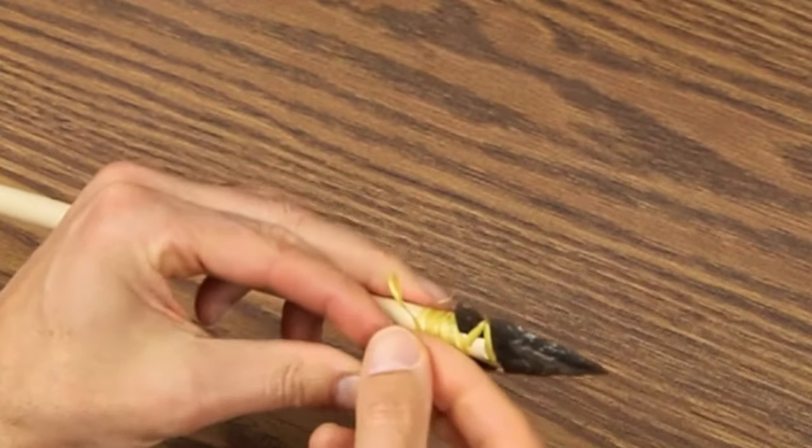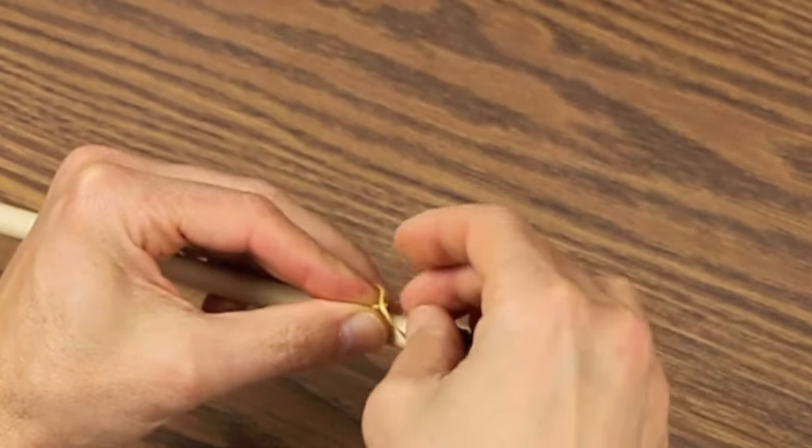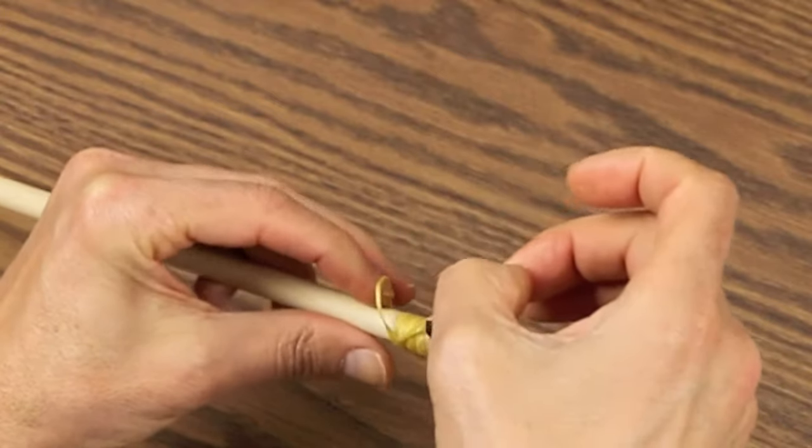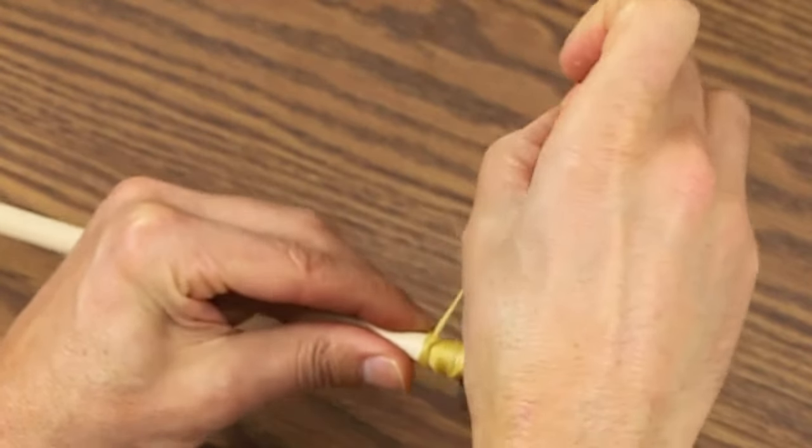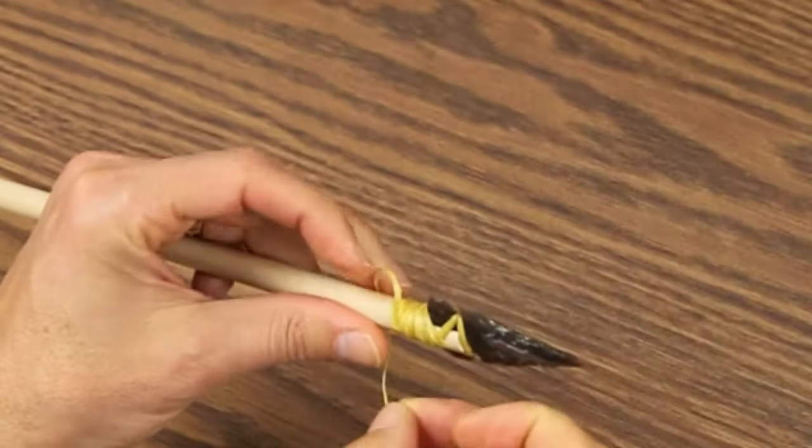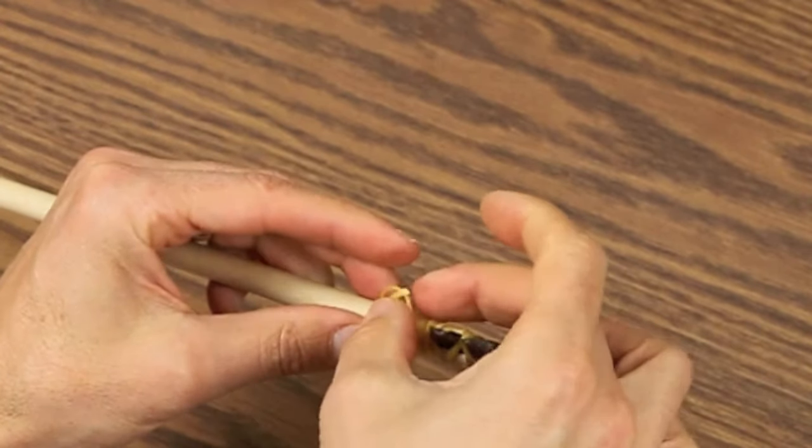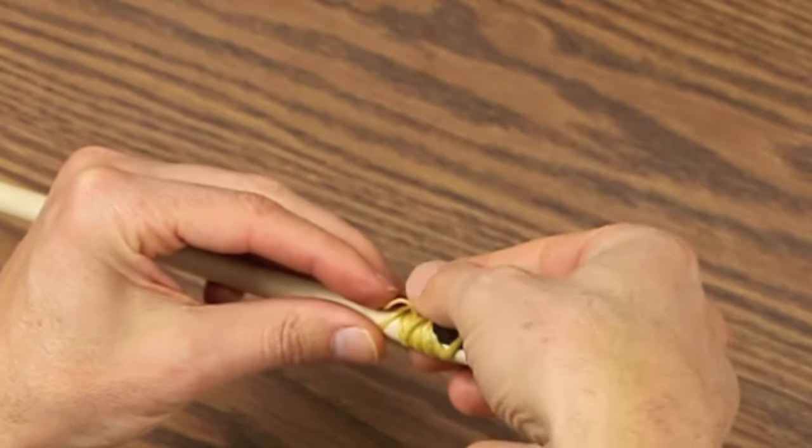Repeat this, creating the loop, passing the sinew through the loop, and pulling it tight again. You'll do this one last time, pulling it tight, and that's the end of the wrapping.